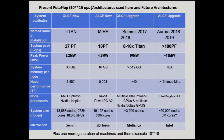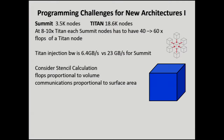This all looks very promising. Here's your little quiz. Titan has about 18,600 nodes. Summit is going to have 3,500. We're going to hit 8 to 10x performance, so each Summit node has to have 40 to 60 times the performance of a Titan node in flops. The Titan injection bandwidth is 6.4 gigabytes per second; for Summit, the projected bandwidth is 23 gigabytes per second. Is the communications network going to handle that for a stencil calculation? That's your quiz.